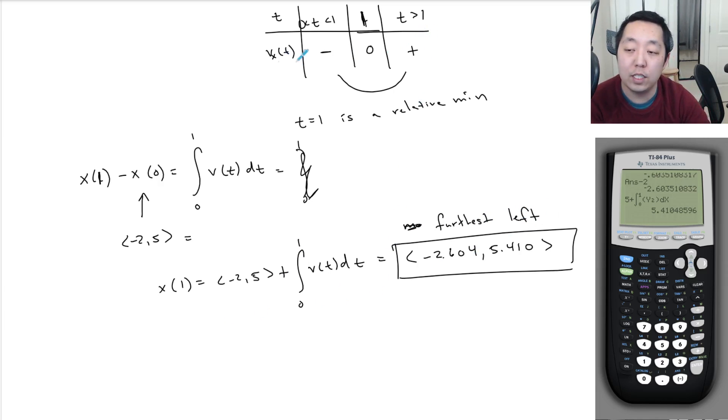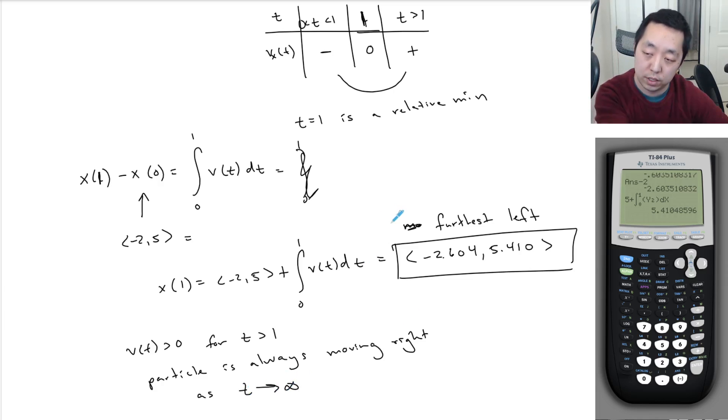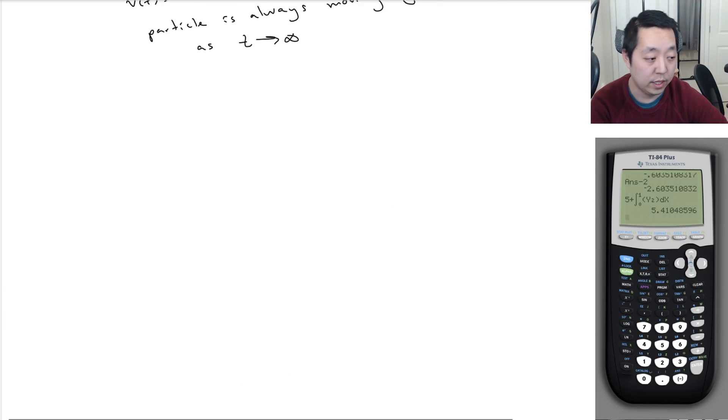The furthest right is, because the velocity is always greater than 0, there is no furthest right point. Because v of t is greater than 0 for t greater than 1, the particle is always moving, moving right, as t goes to infinity. So that's why there's no furthest right point, is because it always has something going to the right.